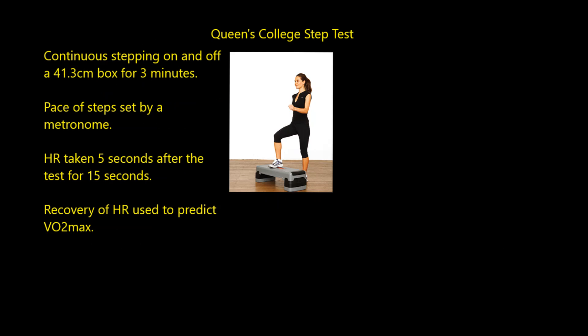The Queen's College Step Test is a bit of a weird one, particularly if you've never done it before. You do continuous stepping on and off a box that is 41.3 centimetres high — developed at Queen's College for a specific reason. You step on and off that box, like step aerobics, for three minutes. The pace is set by a metronome — one of those devices where the pendulum swings and goes tick, tick, tick — or now there are digital apps. This ensures you step at the same, correct, and constant pace. After the three minutes are up, five seconds later, we take your heart rate for 15 seconds. The recovery of your heart rate — how quickly it drops back down — is used to predict your VO2max value.